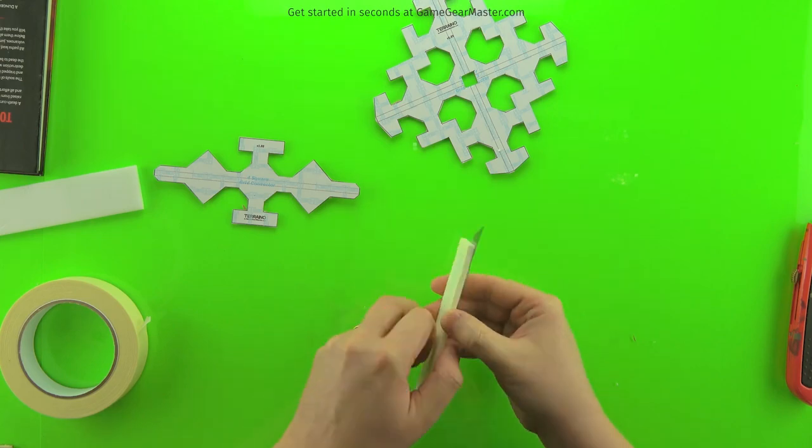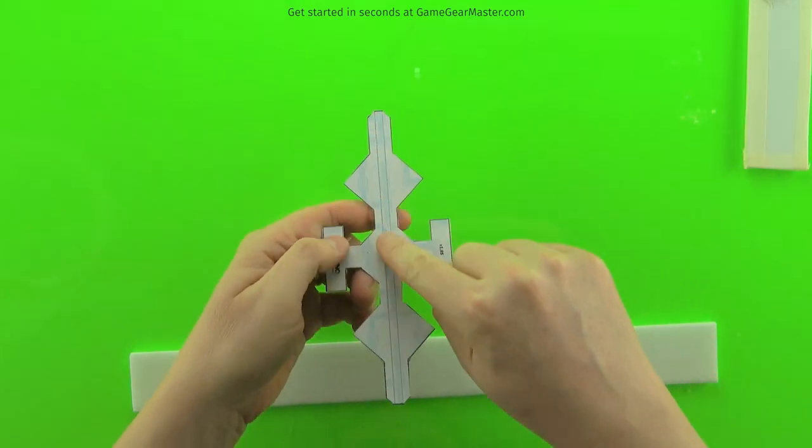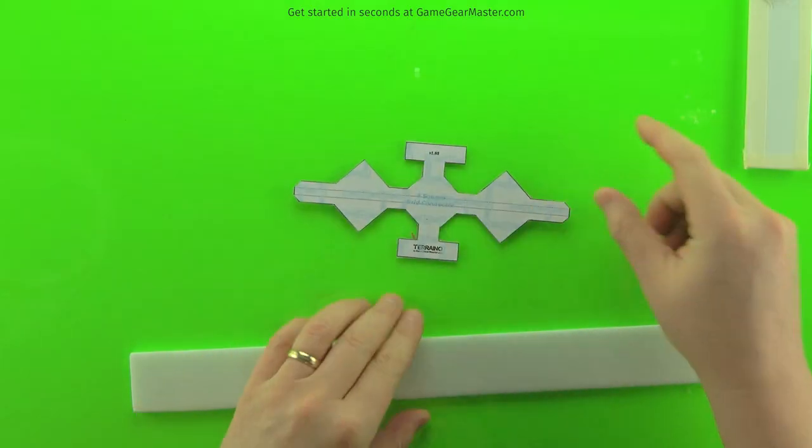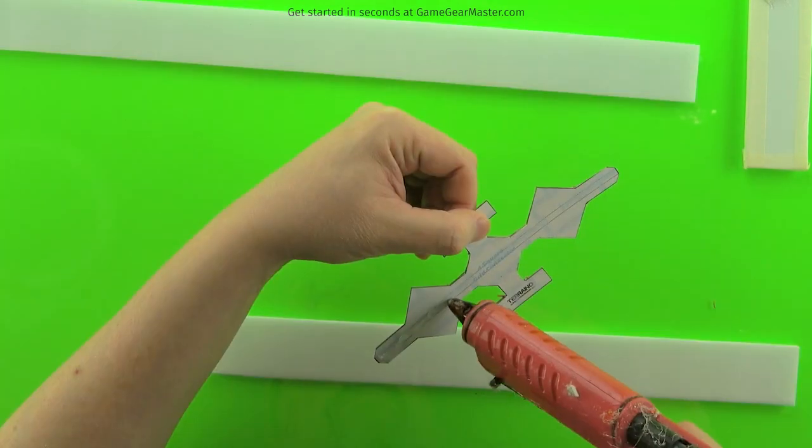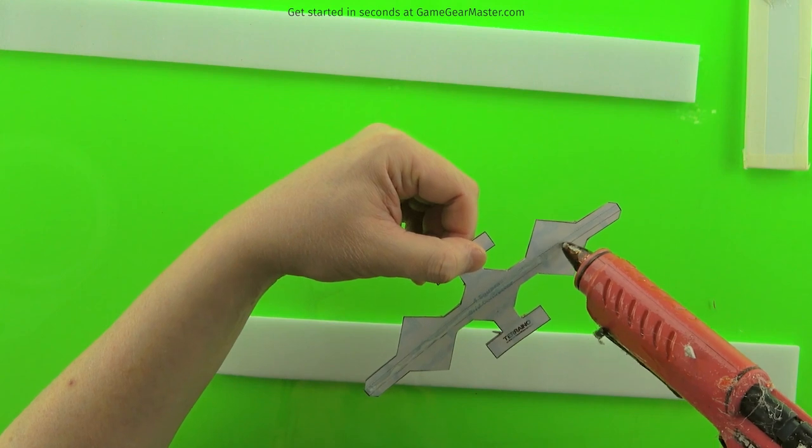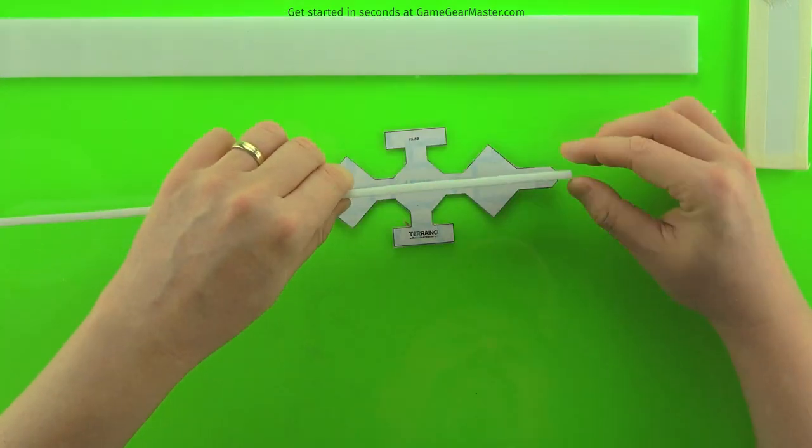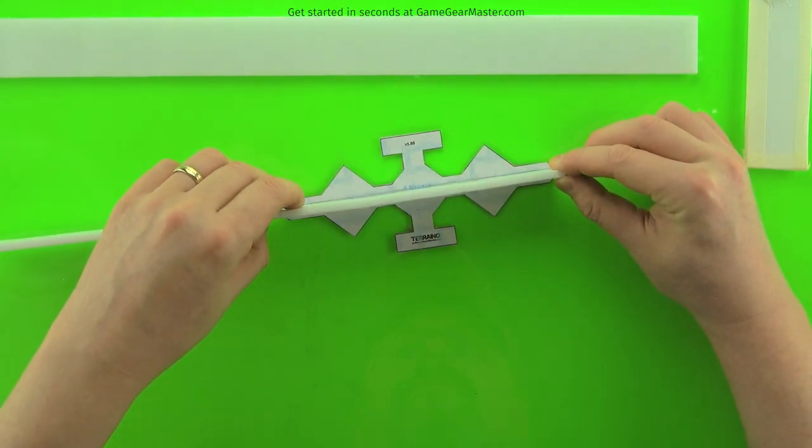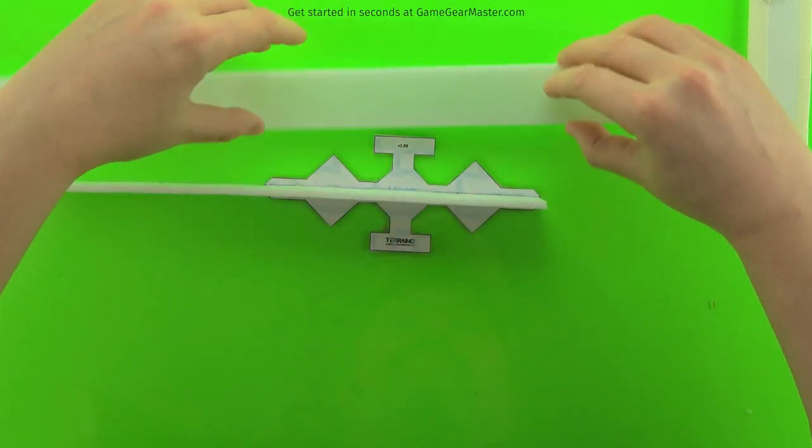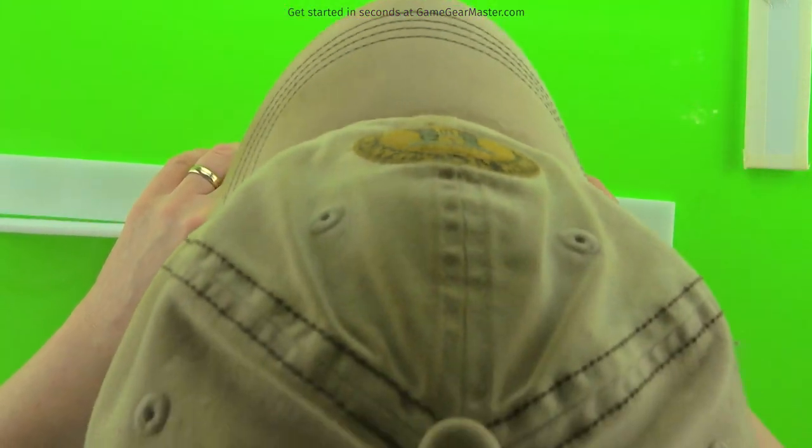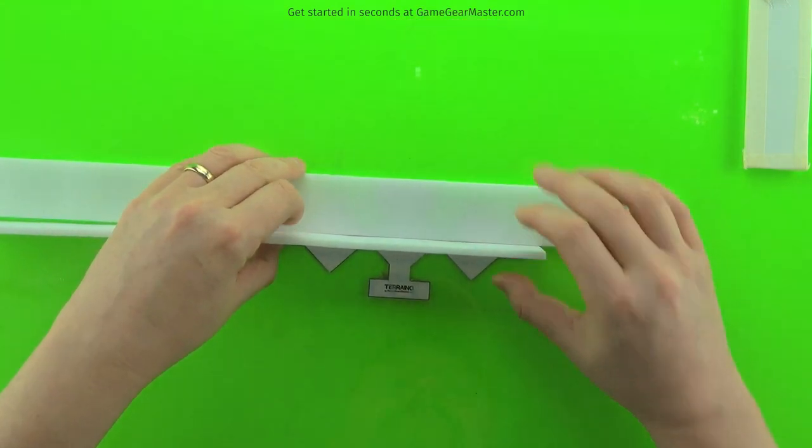But first, we're going to start by gluing the first sheet of foam board into that cutter. And you can just do a strip of whatever. Here I'm using a strip from grid squares. Glue that in place. And you can use another strip of foam board to make sure it's straight and into that little dashed gutter there.